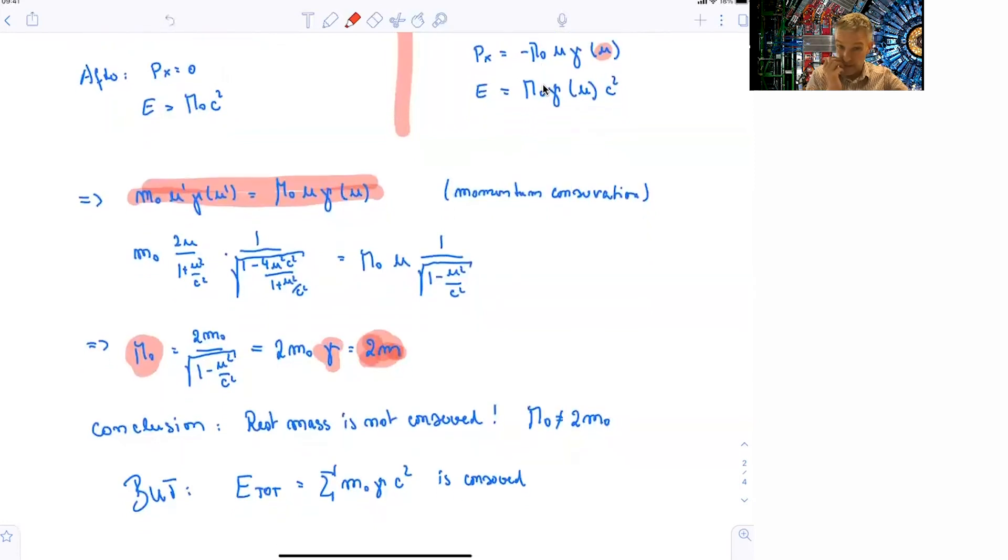But you also find that the total energy is conserved in the collision, so that the sum of m not gamma times c square is conserved in the collision, irrespective to how you actually in this reference frame you discuss the problem.